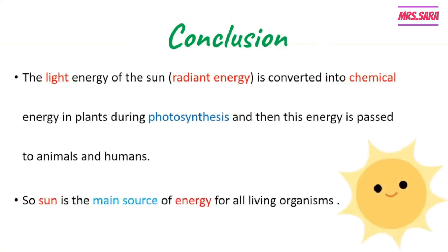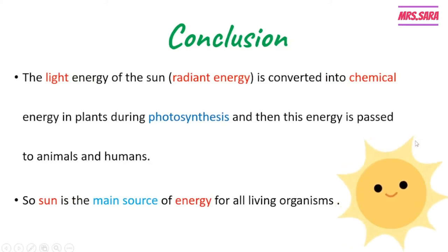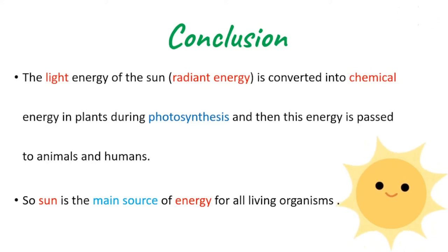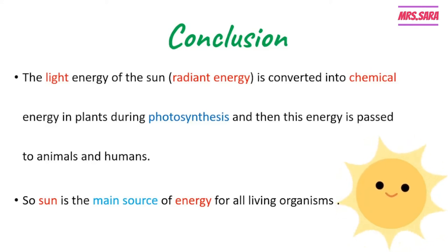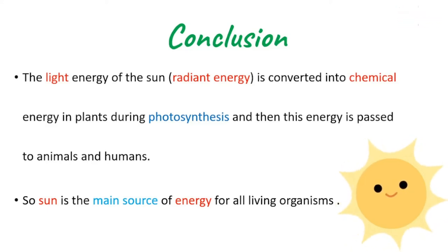The light energy of the sun — the radiant energy, meaning the rays from the sun that carry energy — is converted into chemical energy in plants during the photosynthesis process. The plant leaves take the radiant energy from the sun and convert it into chemical energy through photosynthesis. This energy is then passed to animals and humans in the food we eat. So the sun is the main source of energy for all living organisms.